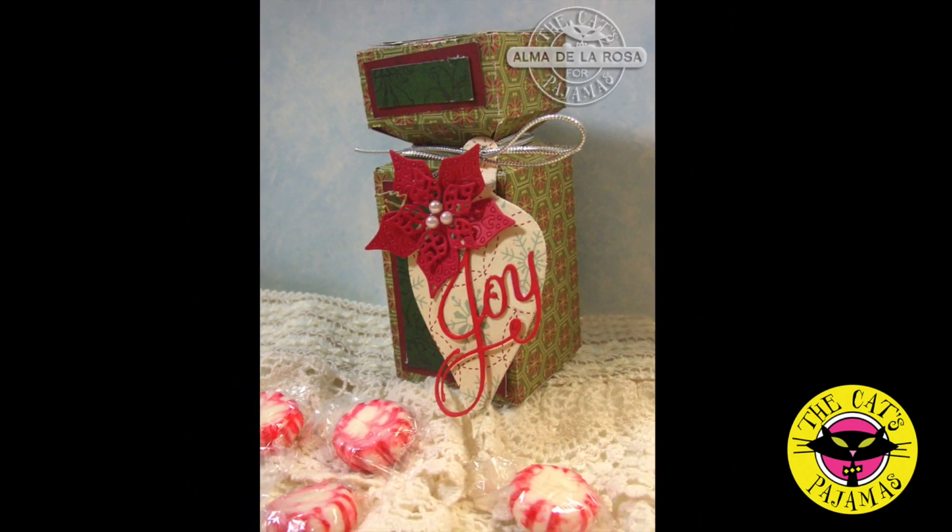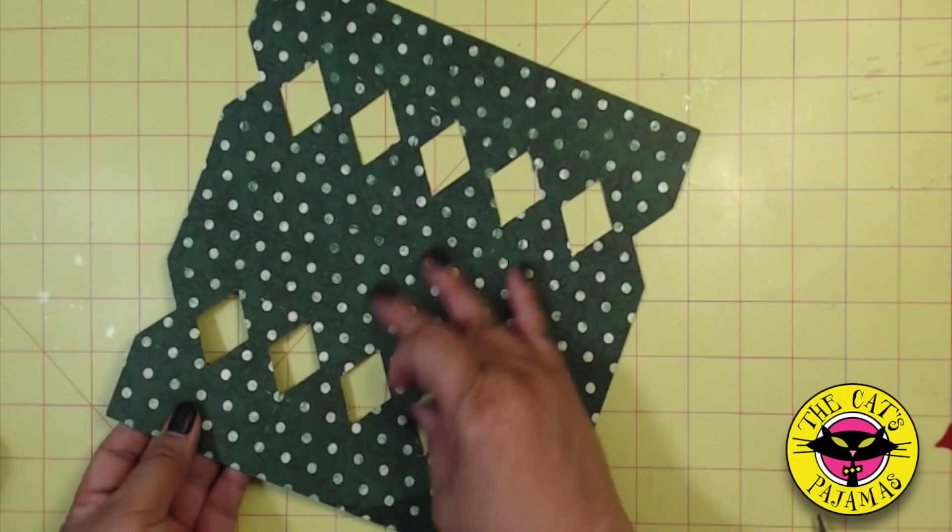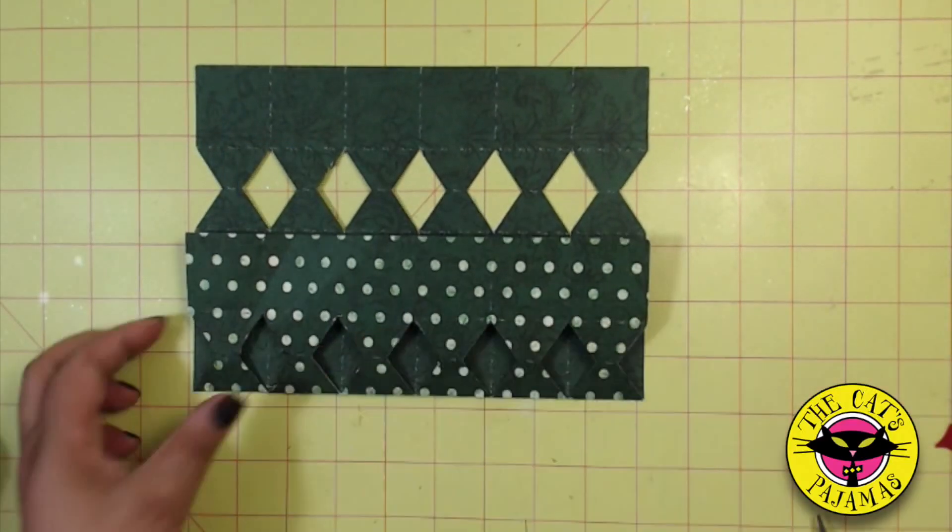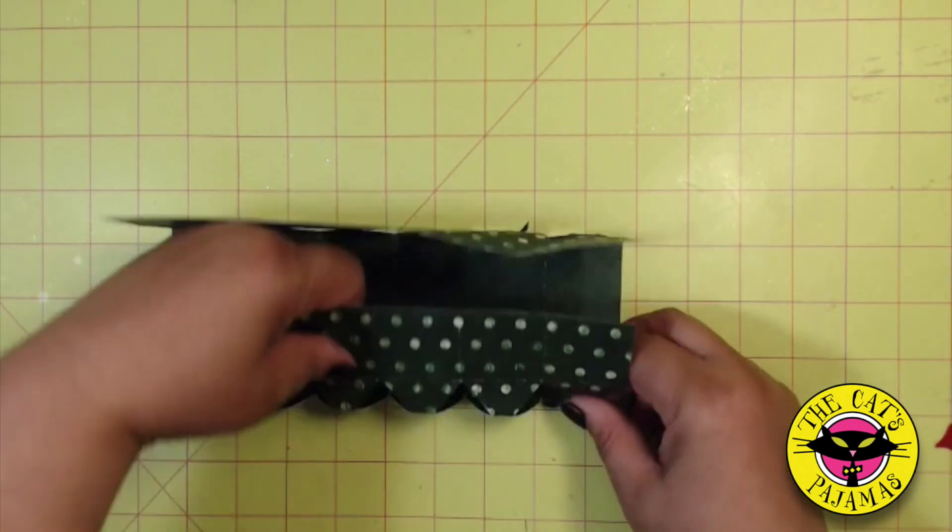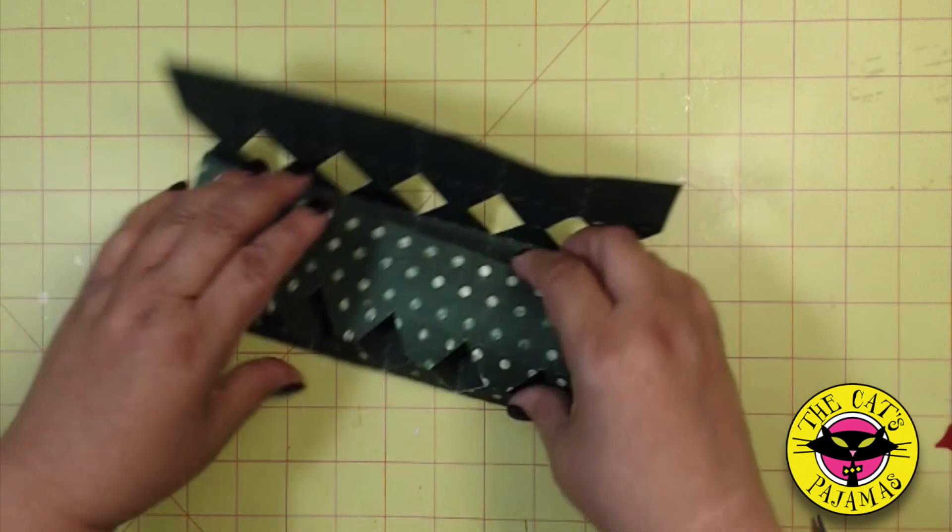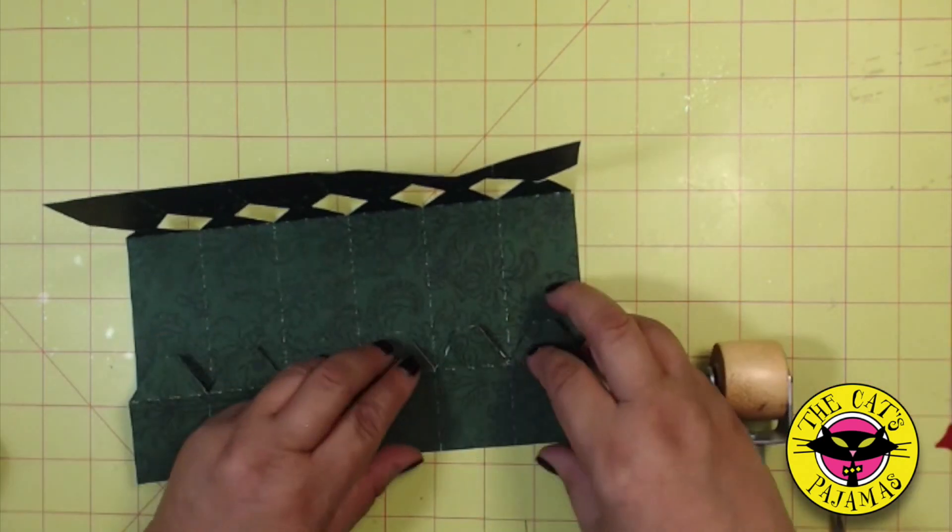First download all the files and cut out each item. Choose whatever side you wish for the outside of the box and turn that side face down. Next, valley fold along each of the score lines with the exception of the score line that runs through the middle of each diamond. That one should be a mountain fold.